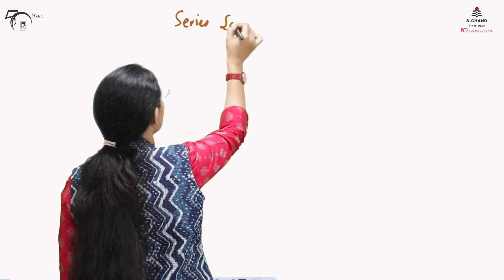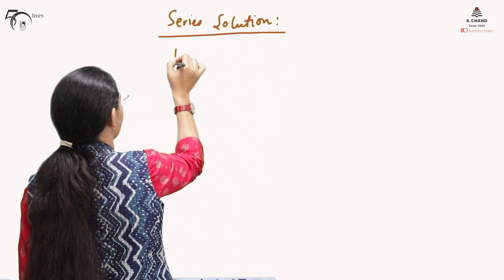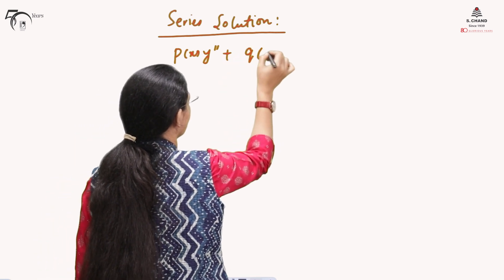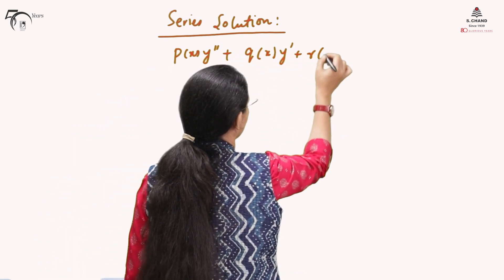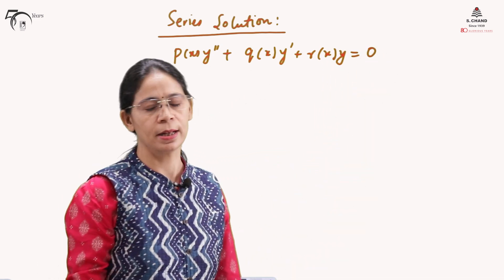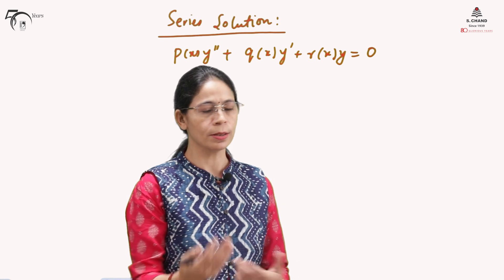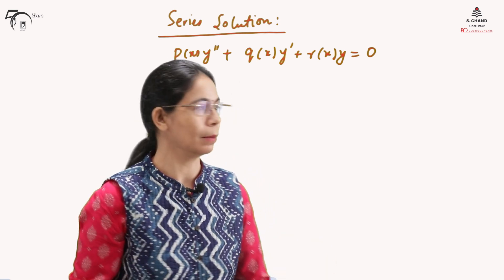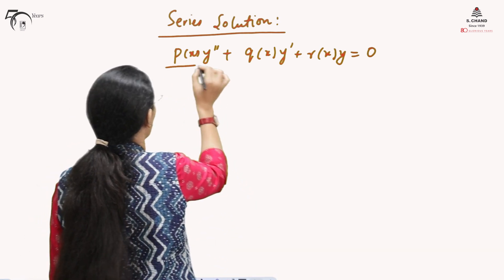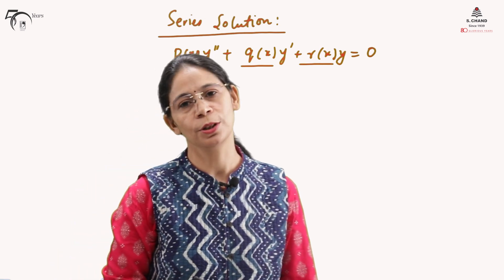As the name indicates, we are going to have a series as the form of the solution. Let us say the differential equation is given as P(x)y'' + Q(x)y' + R(x)y = 0. We are not bothered about the right-hand side — even if it is not zero, this method is still applicable. We can see that the coefficients are not constant, and therefore we need to find out the solution using series solution.